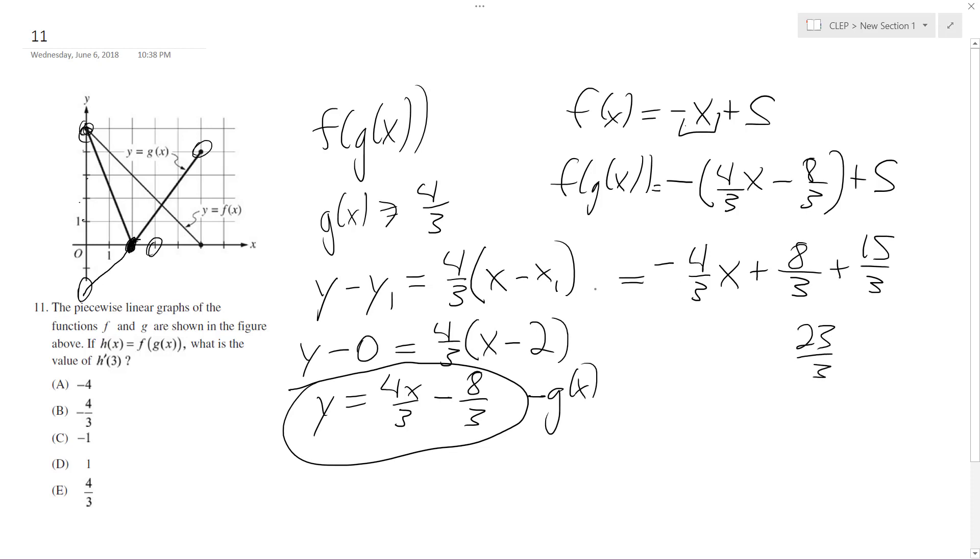but since we're taking the derivative, this whole quantity here is equal to h of x, so h prime of x is going to be equal to - we just have one variable here - negative 4 over 3, and that is part b.